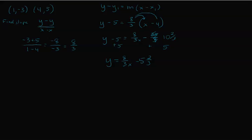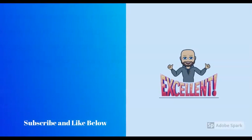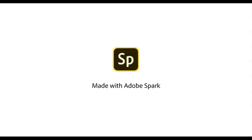It doesn't matter which point you choose to plug into the formula — if I had used the other point, y minus negative three equals (8/3)(x minus one), I still would have ended up with the same answer. Hopefully this helps! We'll work more on it in class. If you like this video, make sure you subscribe and like below, and remember to be more awesome.